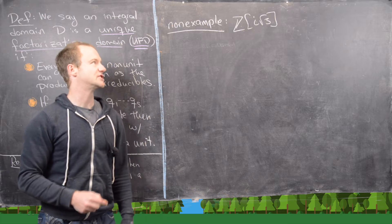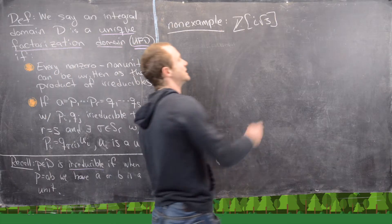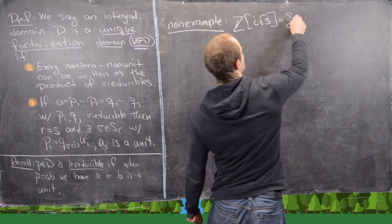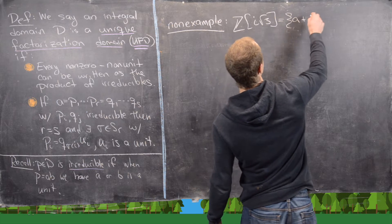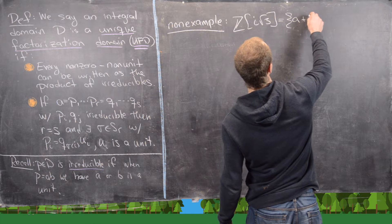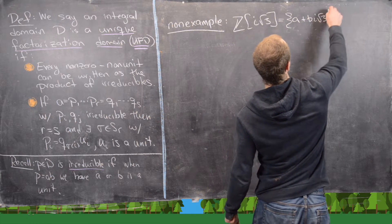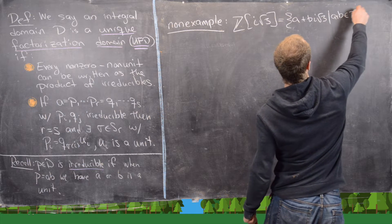The first will be Z adjoin I root 3. So we looked at this ring earlier. So this looks like numbers of the form A plus B times I root 3, where A and B are integers.